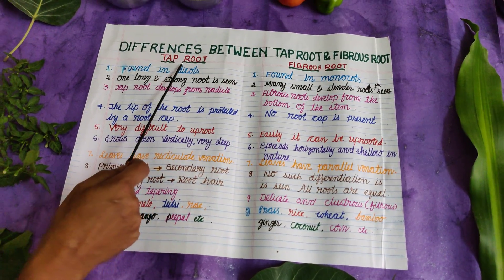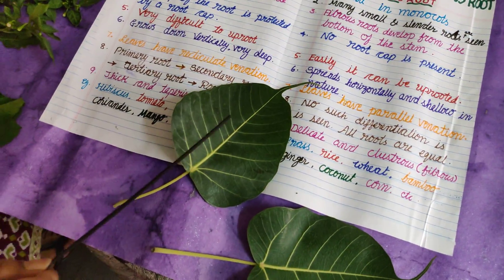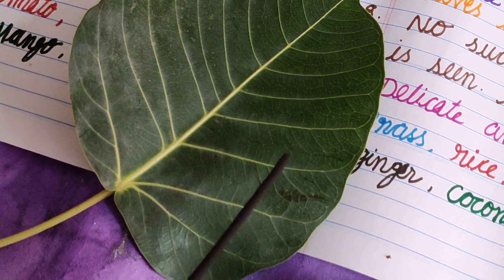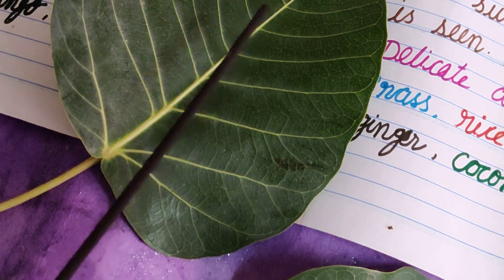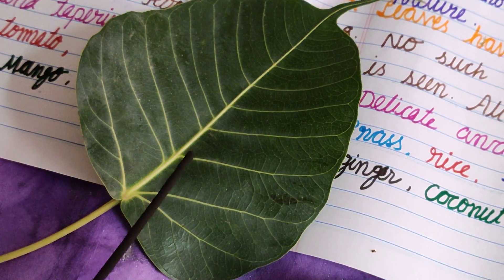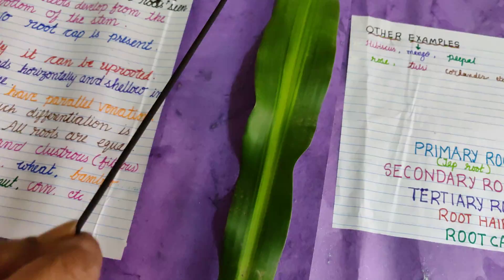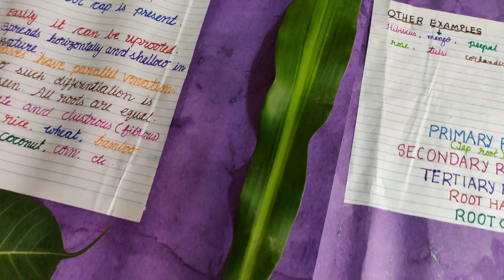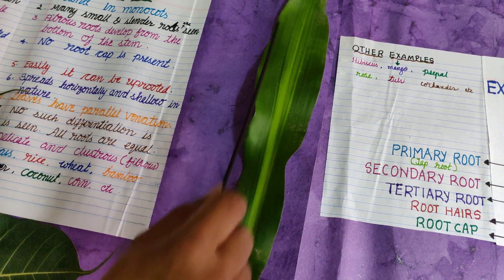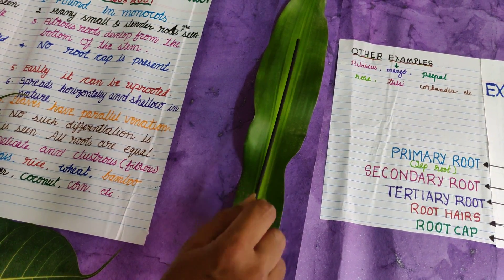How can you know it is a tap root? When you look at the leaves, you can see they have a reticulate venation, in which the veins are like a network. Whereas in the fibrous root system, the leaves have parallel venation — that is, the veins go parallel to each other.